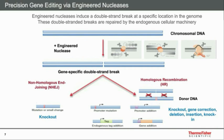Alternatively, homologous recombination is much more specific. In this case, we actually introduce a donor DNA with our genome editing tool, allowing us to create a very precise knockout, perform a gene correction, a SNP correction, a small deletion, insertion, or a knock-in. We use it for mutating a promoter, adding a promoter, adding a gene, or even adding an endogenous tag.